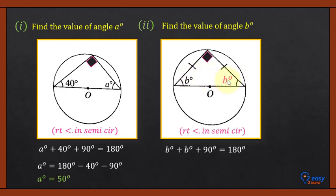Angle b plus angle b plus 90 degrees should be equal to 180 degrees. So b plus b, 2b, subtract 90 from 180. So 90 divided by 2. So angle b is 45 degrees.